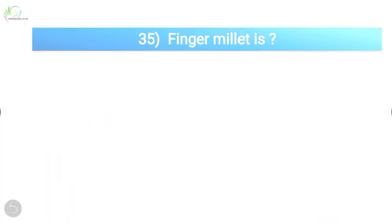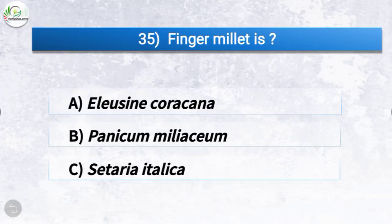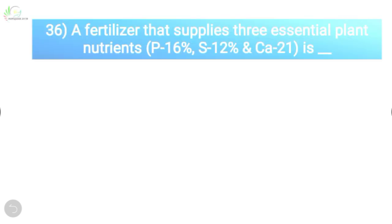Question number thirty-five: finger millet is which scientific species? The options are Eleusine coracana, Panicum miliaceum, Setaria italica, or none of these. The correct answer is option A, Eleusine coracana. So finger millet is Eleusine coracana.